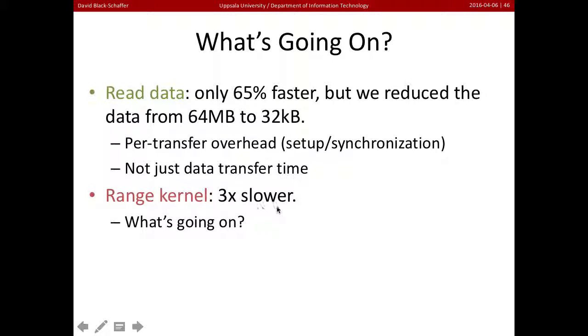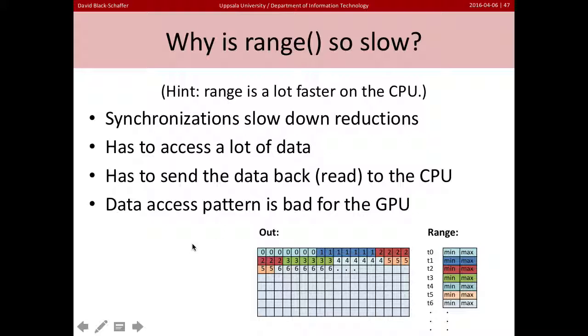But the real issue here is the range kernel. Why is it three times slower? Why was it that when we made this kernel parallel and put it on the GPU it ran three times more slowly than doing it in serial on the CPU? So what's going on here?